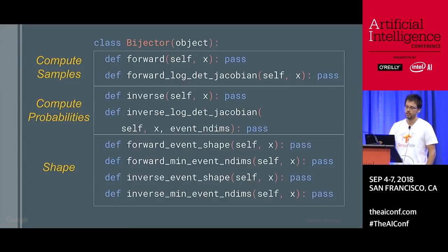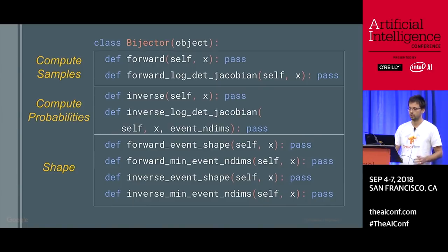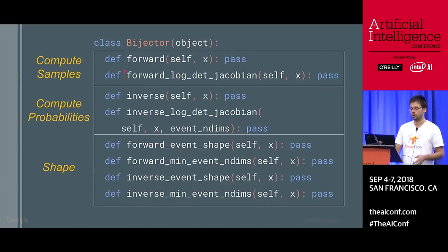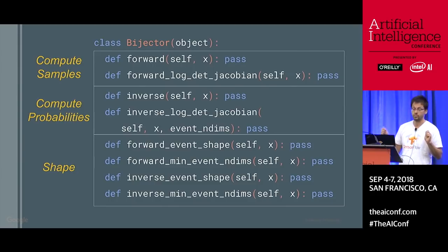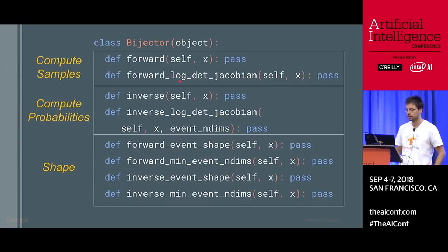Onto our second building block: bijectors. A bijector is useful for transforming a random variable — think log and exp. On the forward transformation you take the exponential of some random variable, and to reverse it you take the logarithm. The forward is useful for computing samples and the inverse for computing probabilities. A bijector is a bijective diffeomorphism — a differentiable isomorphism between two spaces, representing an input random variable and an output random variable. Because we're interested in computing probabilities, we have to keep track of the Jacobians — it's just change of variables in an integral. Everything also supports batch shape semantics.